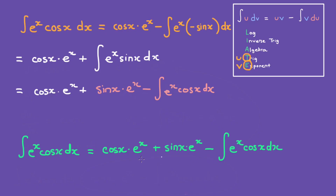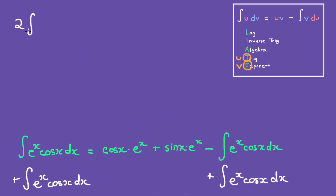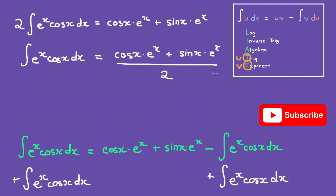What we can do is add the integral of e to the power of x cosine of x dx to both sides of the equation. The reason we're doing this is so that the minus integral term will cancel out. On the left-hand side we then have 2 times the integral of e to the power of x cosine of x dx, and on the right-hand side we have cosine of x times e to the power of x plus sine of x times e to the power of x. Now all we have to do is divide both sides by 2, giving us cosine of x times e to the power of x plus sine of x times e to the power of x, all over 2. And don't forget the plus c.